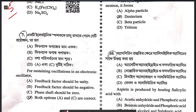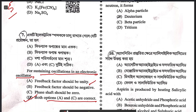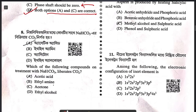Next question: for sustaining oscillations in an electronic oscillator, the correct option is D — both options A and C are correct. The feedback factor should be unity and the phase shift should be 0 to 180 degrees. That's why the answer is D.